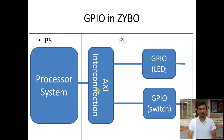Welcome to this video. I'm going to teach you how to implement a GPIO in ZBoard. As we know, ZBoard has two parts: PL (programmable logic) and PS (processor system). In PL we implement our logic, and in PS we verify whether our logic is right or wrong. In this video, the GPIO will be implemented in the PL part and tested in the PS part.